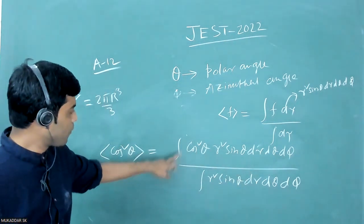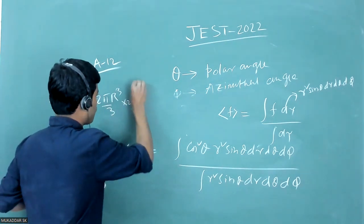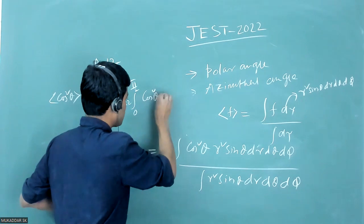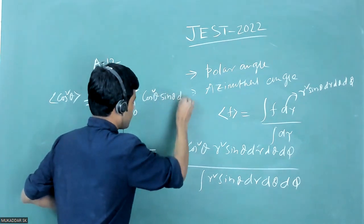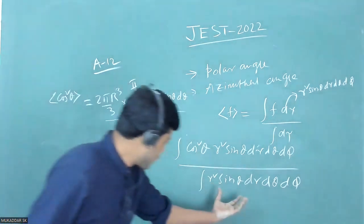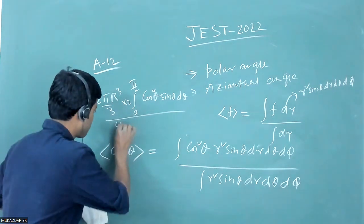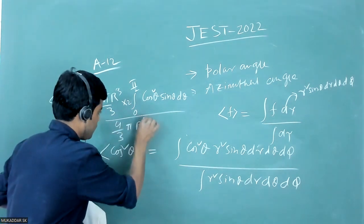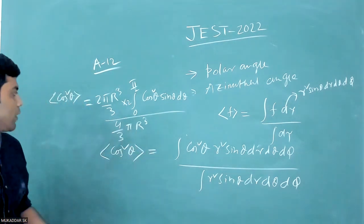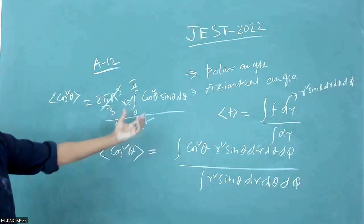This limit from 0 to π can be written as 2 times the integral from 0 to π/2 of cosine square theta times sine theta dθ. In the denominator, the integration over the full volume element gives the volume of the sphere, which is 4/3 π r cube. Since r cancels and it is a unit sphere, you are left with just this theta integration.